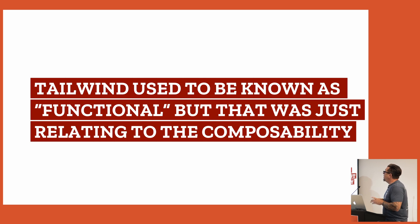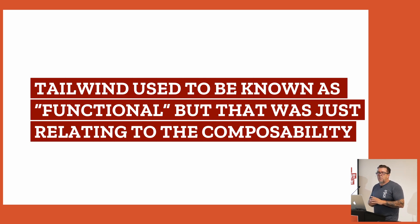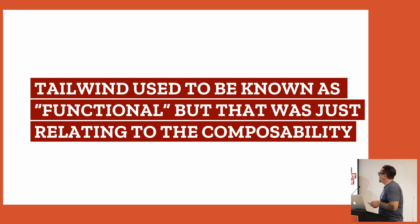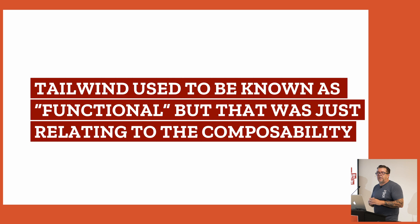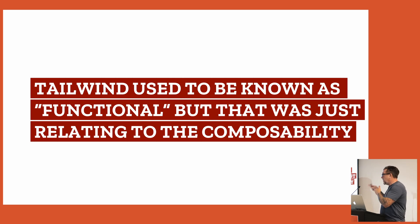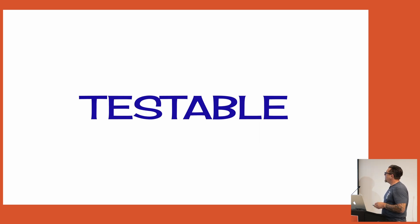In the good old days when Tailwind first came out it was actually called functional CSS — we now know it more as an atomic version of CSS, getting down to the very smallest parts. So if you get buttonholed by a cranky old developer, that's not what functional CSS is — you know the difference now.